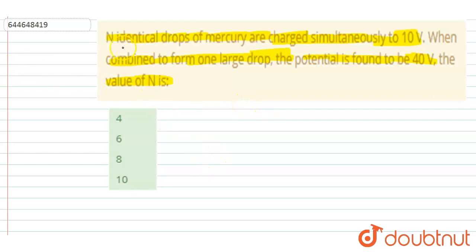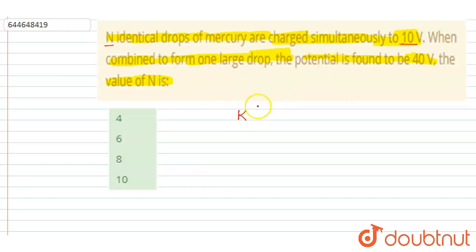It is said that n drops are there and they are charged to this much volt. So the charge on each drop is q, and I will write kq by r equals to 10 volt.